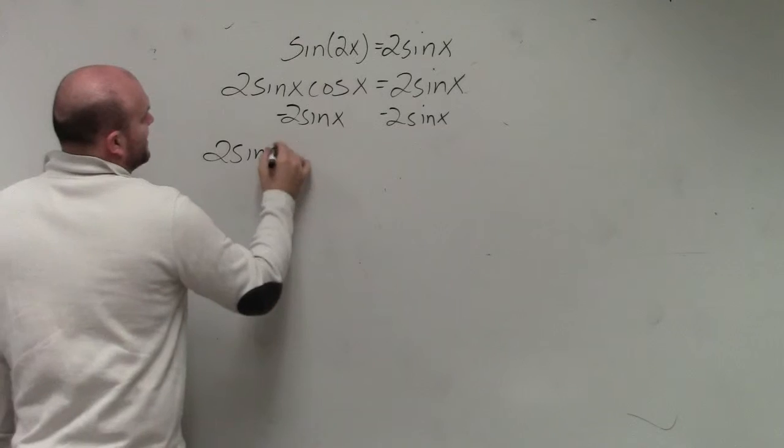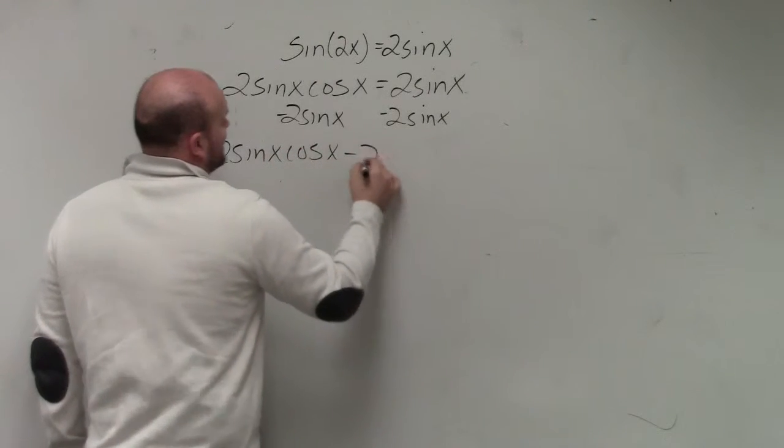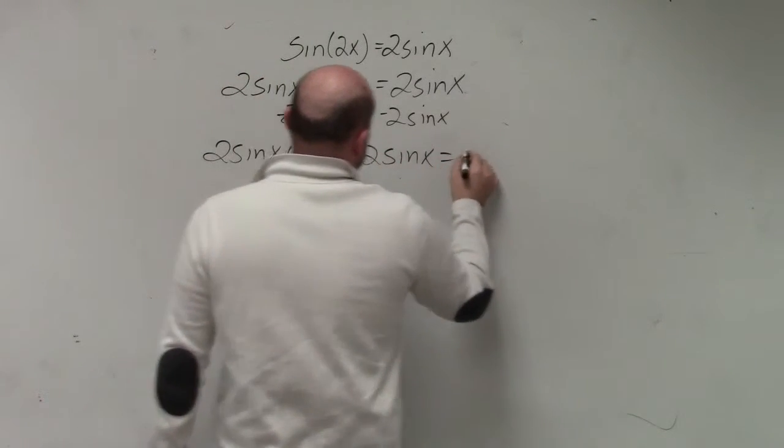So therefore, I have 2sin(x)cos(x) - 2sin(x) = 0.